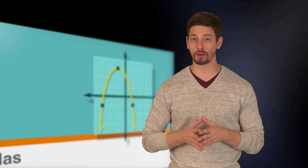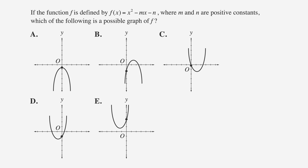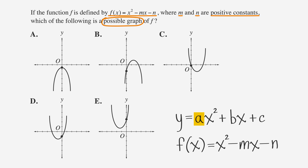Let's look at an ACT problem that asks about the graph of a parabola when the equation is given in standard form. Consider this problem: if the function f is defined by f of x equals x squared minus mx minus n, where m and n are positive constants, which of the following is a possible graph of f? In the equation, a, the coefficient of x squared, is 1, so the parabola is cupped upward — we can eliminate choices a and b as they're cupped downward. Since b, the coefficient of x, is negative m and b is negative, the parabola is shifted to the right. The only remaining graph shifted to the right is graph c, so c is the answer.